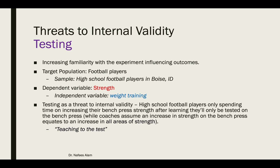The next threat to internal validity is testing, defined as increasing familiarity with the experiment influencing outcomes. Again, the target population is football players, the sample is high school football players in Boise, Idaho, the dependent variable is strength, and the independent variable is weight training. Testing as a threat would be where high school football players only spend time increasing their bench press numbers after learning that's the only way they'll be tested on strength, and coaches assume that an increase in bench press strength means an increase in all areas of strength. This is also called teaching to the test.